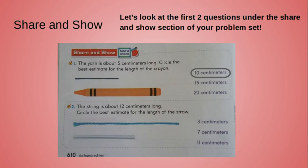The second example says: the string is about 12 centimeters long — circle the best estimate for the length of the straw. My known length is the string at 12 centimeters. The straw is shorter than the string, so my answer has to be less than 12. The choices are 3, 7, and 11 centimeters. The straw looks more than halfway past the string — half of 12 is about 6, and a little more than 6 is 7 — so 7 centimeters is my estimate for the straw.